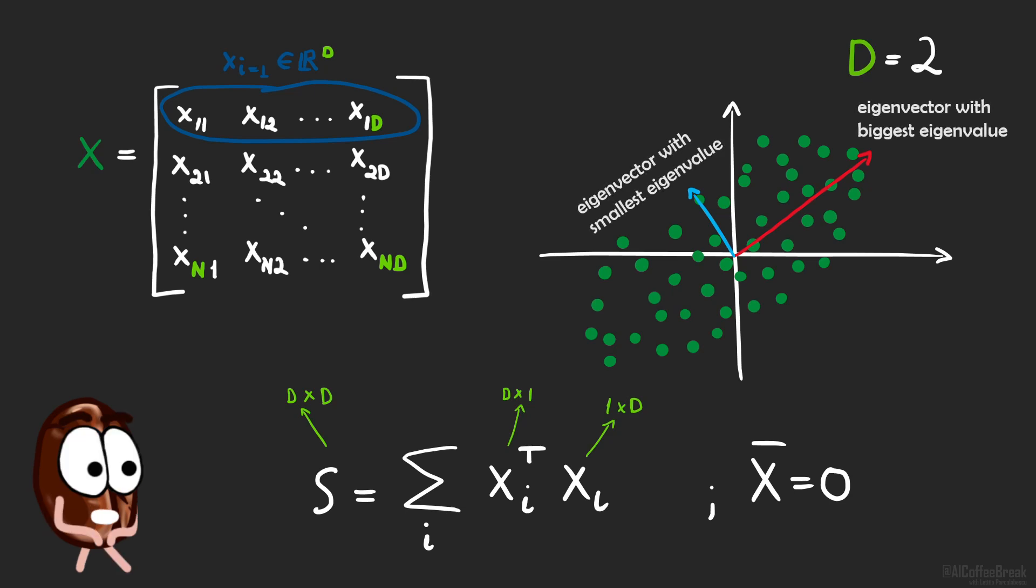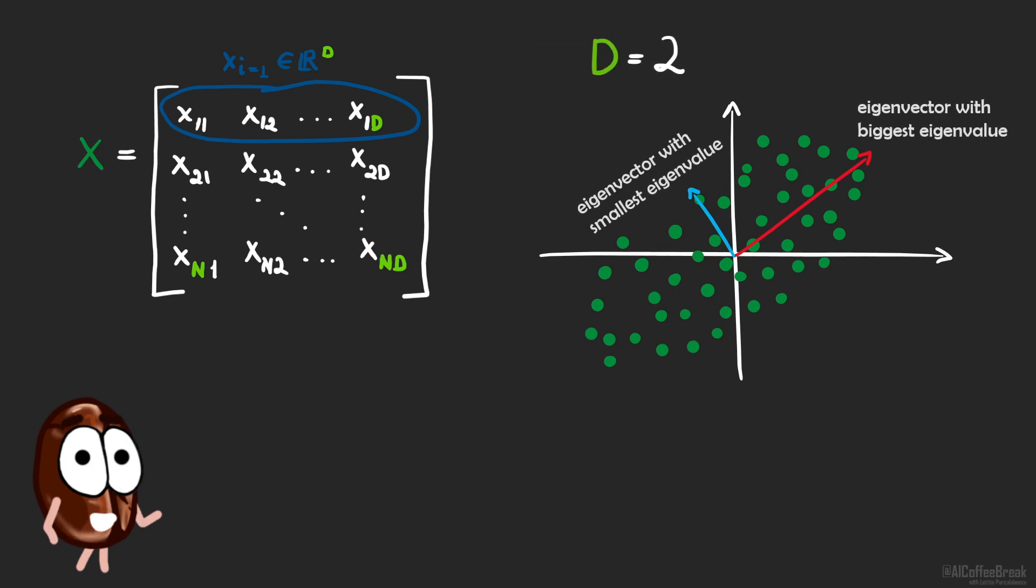For big matrices, we do it of course in code, like with this in Python. Now that we have eigenvectors, we can sort them by eigenvalue to determine their importance. And we are ready to reduce the dimension.